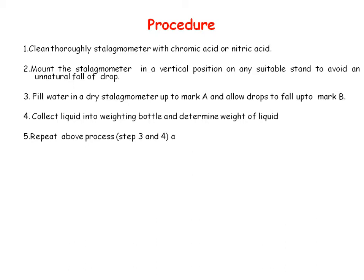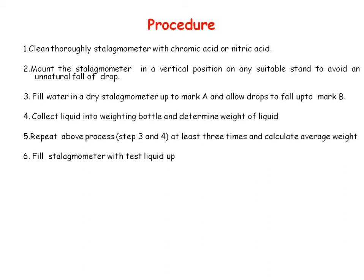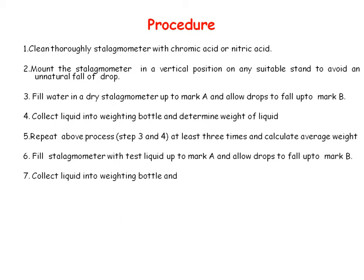Repeat the above process at least 3 times and calculate the average weight. You have to fill the stalagmometer up to mark A, allow the liquid to flow to mark B, and measure the weight of liquid collected in the beaker using a weighing balance — take 3 readings for each liquid. Similarly, follow the same procedure for your test liquid, filling up to mark A, allowing flow to mark B, collecting the liquid, and taking 3 readings to calculate the average weight.